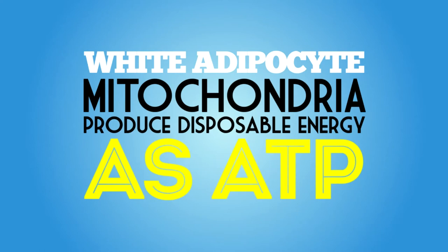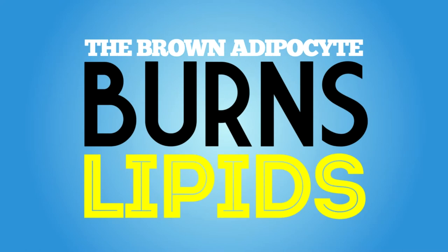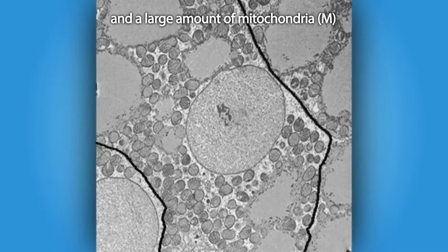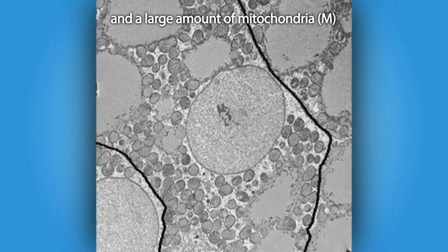On the contrary, the brown adipocyte burns lipids. The brown adipocyte is spiky. A section shows that it contains small lipid droplets, marked L, and a large amount of mitochondria, marked M. These mitochondria are unique because they burn lipids to produce heat.